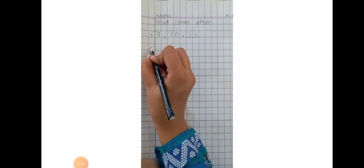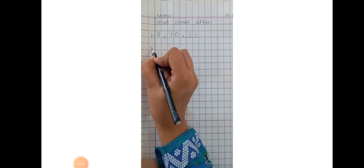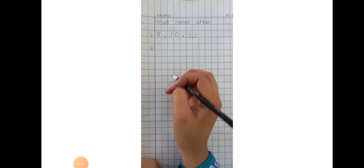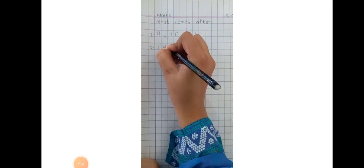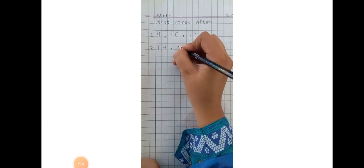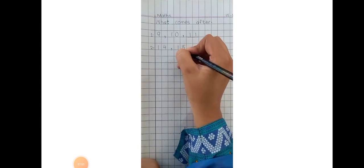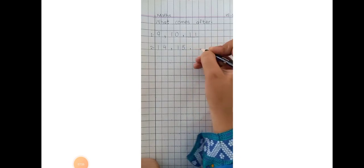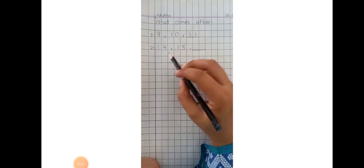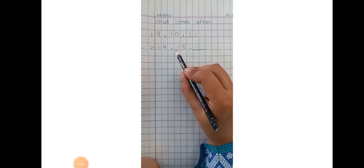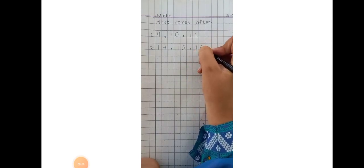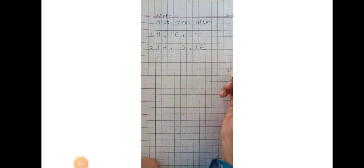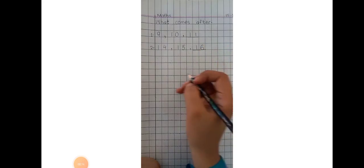Now leave one line and inside margin line write down number 2. Write down 14, comma, 15, comma, dash. Now what comes after 15? 14, 15, 16. What comes after 15? 16. Excellent.